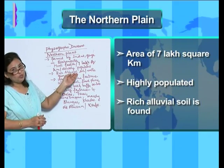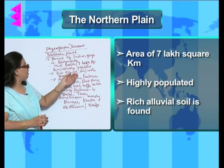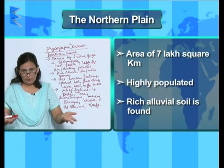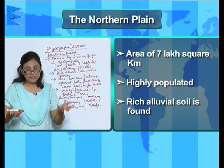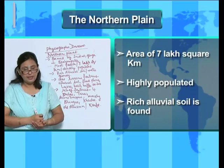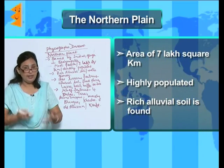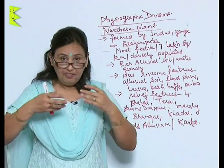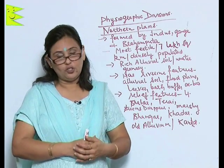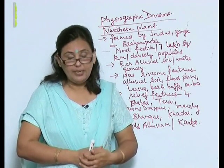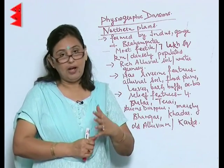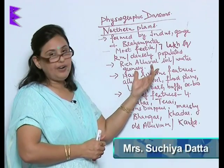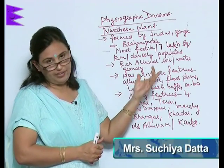Rich alluvium soil is found here and there is a lot of water, as it is formed by the rivers. The soil is also rich, therefore it is very fertile, and this part of the country is called the Granary of India.